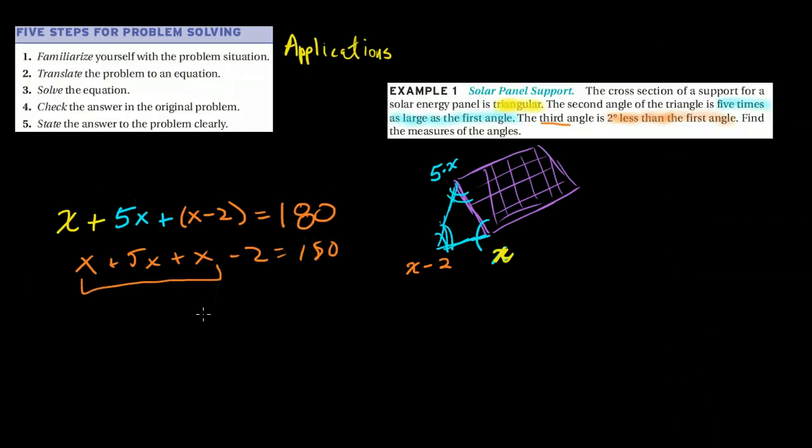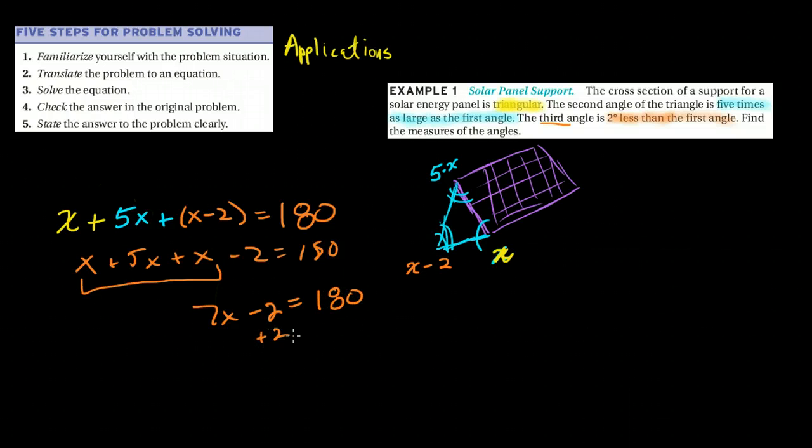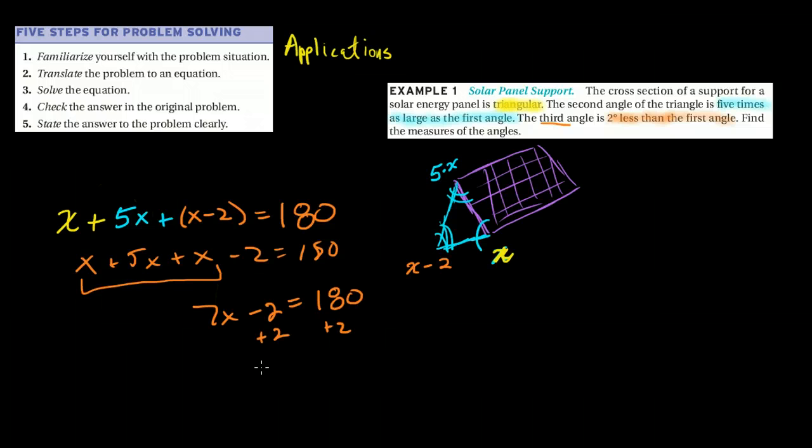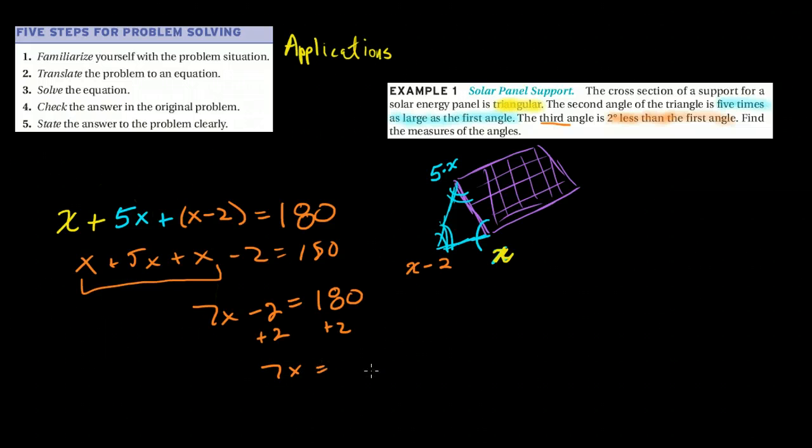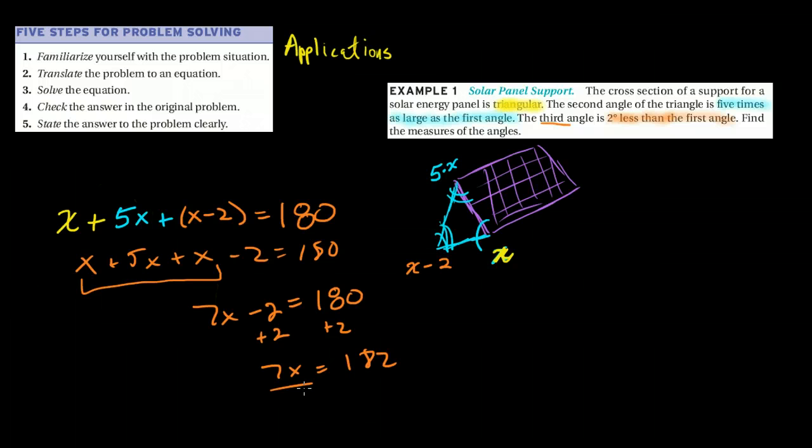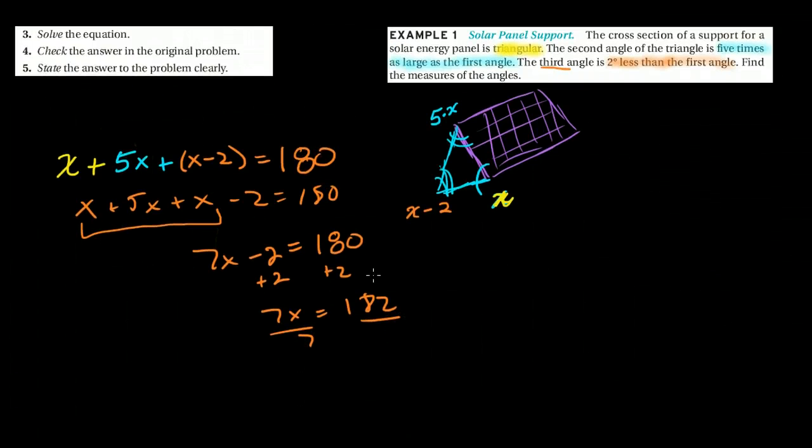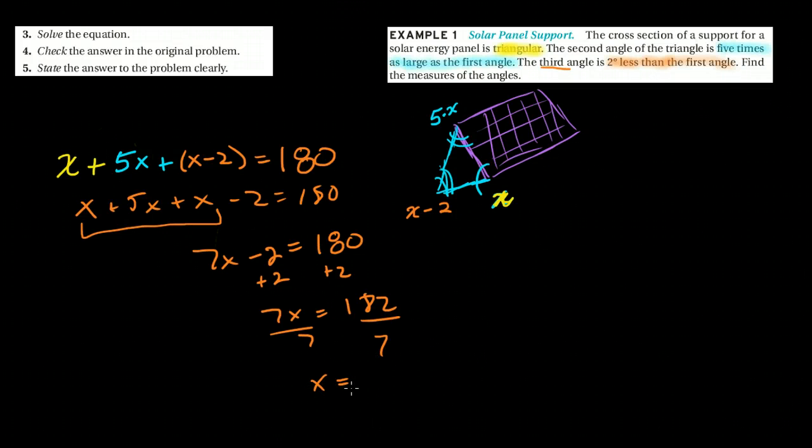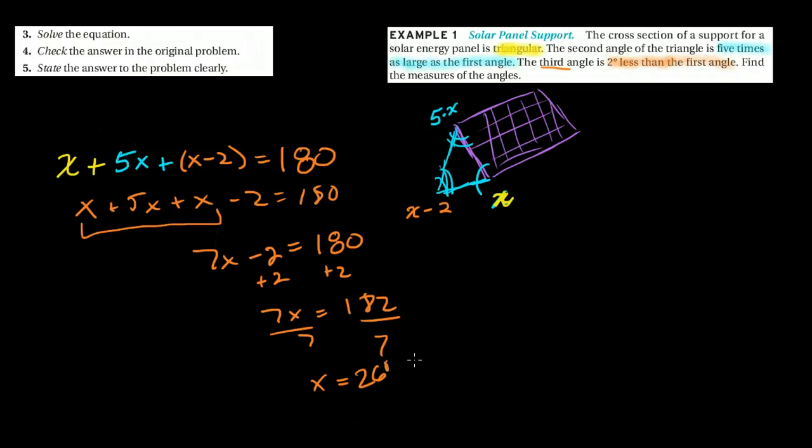I have like terms here, so 1 plus 5 is 6, plus another one is 7x minus 2 is equal to 180. I have to add 2 to both sides. I have that 7x is equal to 182. So when I divide by 7 both sides, I get that x is equal to 26 degrees.